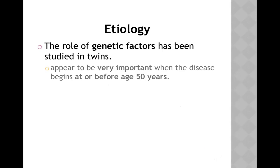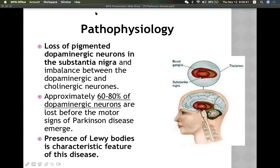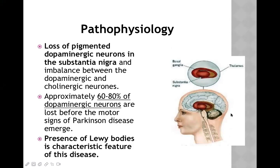Another hypothesis is the oxidation hypothesis: free radicals liberated from dopamine's oxidative metabolism are responsible for damage to dopaminergic neurons. Genetic factors also play a role, supported by twin studies, and appear especially important when the disease begins at or before age 50.